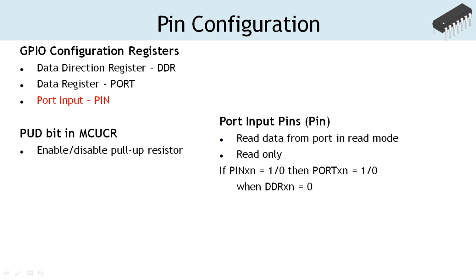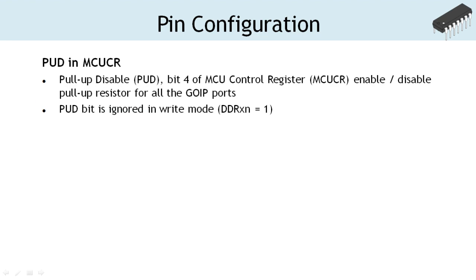The port input register is used to read data from the port when it is configured in input mode. This is a read-only register. However, writing logic 1 or 0 to the pin register results in the replication of that logic level in the corresponding data register. The assembly instructions set bit IO register SBI and clear bit IO register CBI are used to set or clear the individual bit of a port register, giving flexibility to configure individual bits in read or write mode. The PUD pull-up disable bit in the microcontroller control register overrides the configuration of the pull-up resistor set by port registers in input mode. Setting the bit to 1 disables pull-up resistors for all pins in the GPIO ports; however, the pull-up disable status is disregarded in output mode.